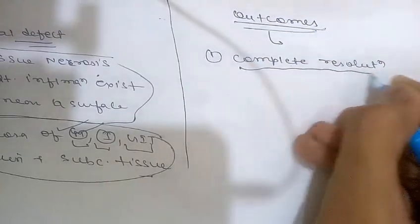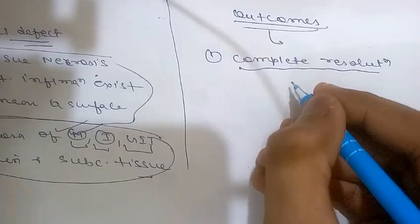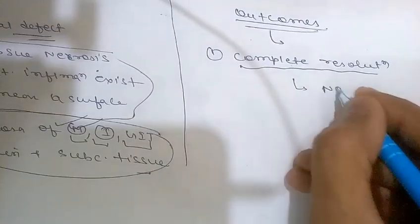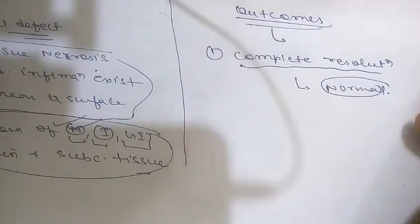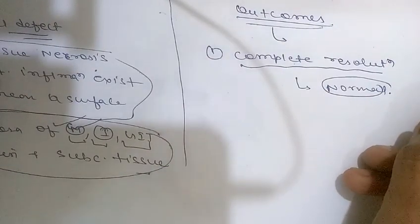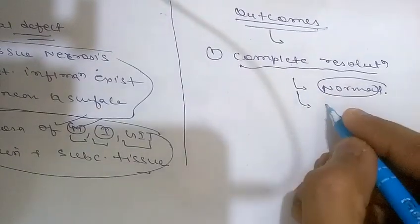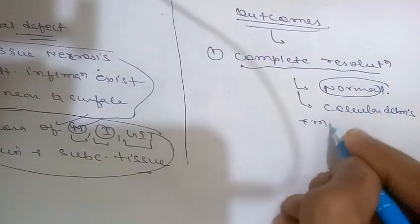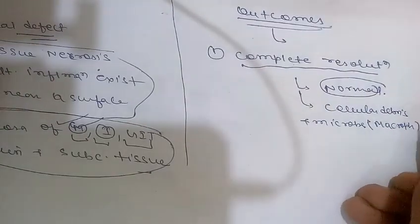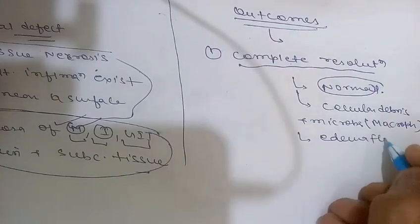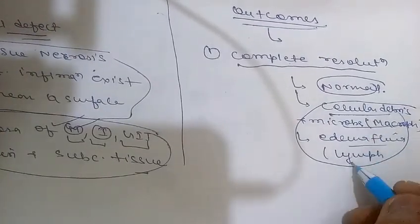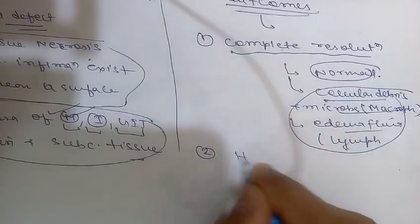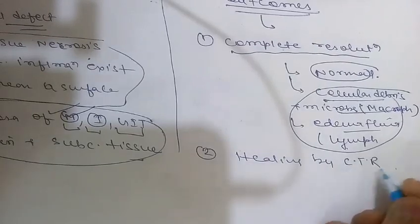The first outcome is complete resolution. In a perfect world, all inflammatory reactions, once they have succeeded in eliminating the offending agent, should end with restoration of the site to normal. This is called resolution and is the usual outcome when the injury is limited or short-lived with little tissue destruction. Resolution involves removal of cellular debris and microbes by macrophages and reabsorption of edema fluid by lymphatics.